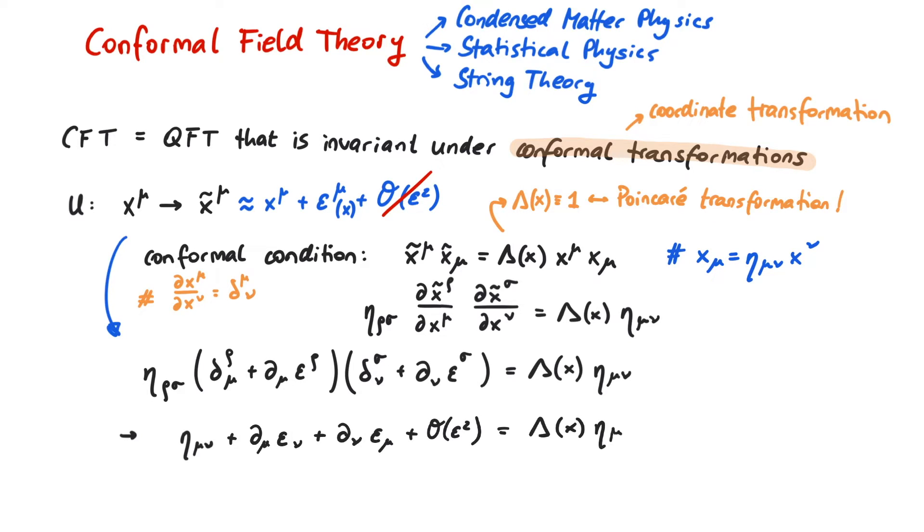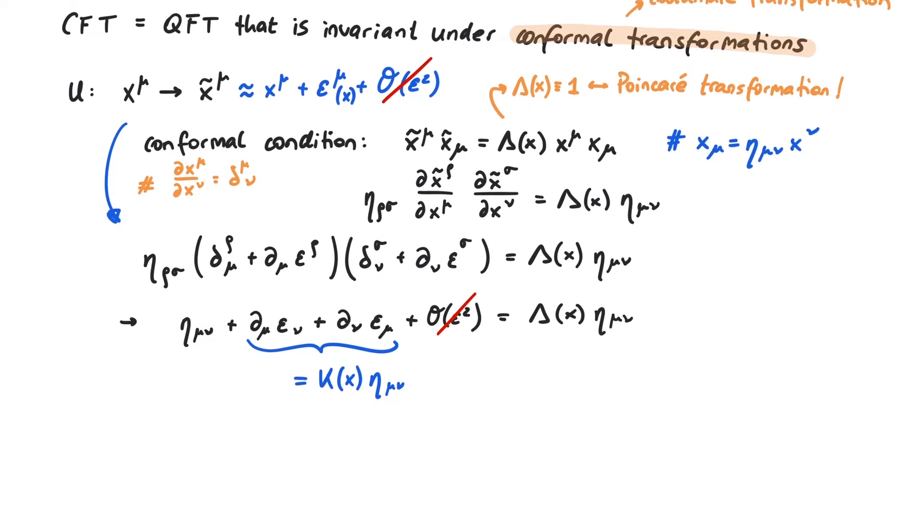The right-hand side tells us that the tensorial structure has to be that of eta mu nu. So we conclude that this expression has to be proportional to eta mu nu, with the proportionality factor k of x. Finally, we will find out what this proportionality factor is.